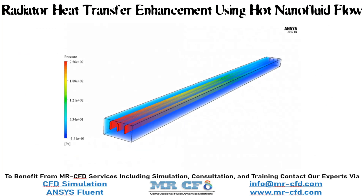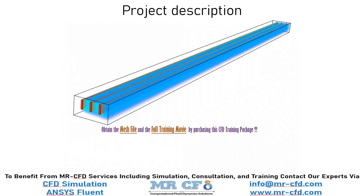Obtain the mesh file and the full training video by purchasing this product. The present problem simulates heat transfer inside a radiator with nanofluid flow using ANSYS Fluent software. The working mechanism is such that the flow of hot fluid passes through the pipes inside the radiator, while air flow passes over the pipes, receiving their heat, and the resulting hot air flow is transferred to the outside environment.